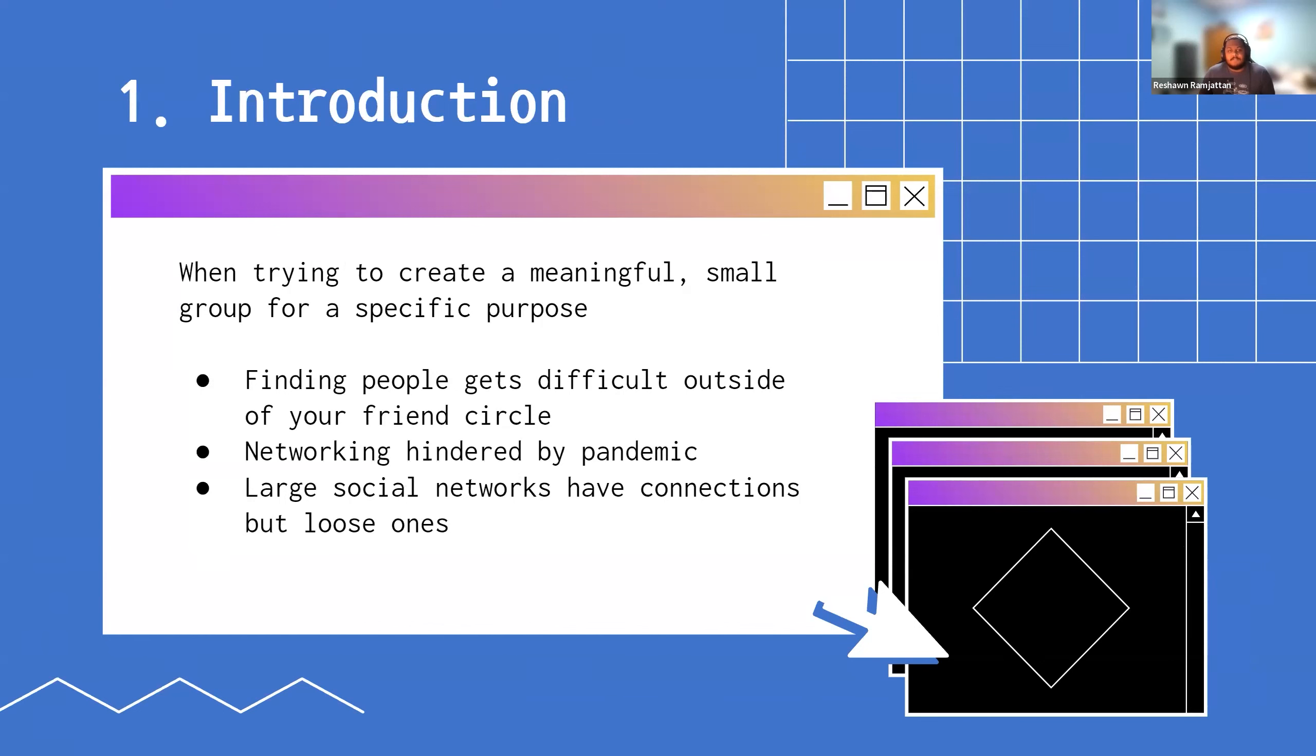Whether it's a private event or a study group or recruiting for a company, when you're trying to create a meaningful small group for some specific thing, things can get pretty difficult once you've exhausted your existing friends. At the time when we began this, the pandemic was hindering a lot of in-person events more than they are now, but even if in-person events are possible, the problem still exists because if you're in a class with people for the same subject or if you're attending some conference, who you meet still has an element of randomness to it.